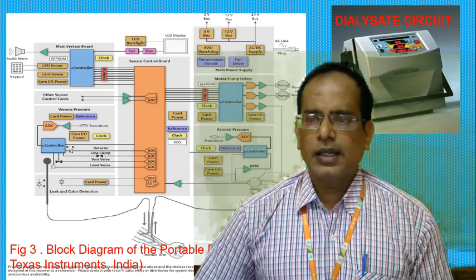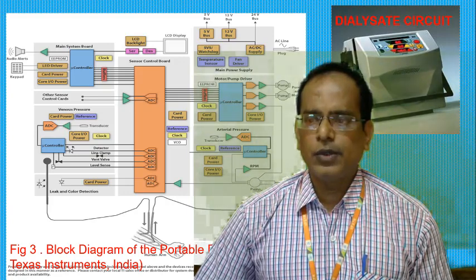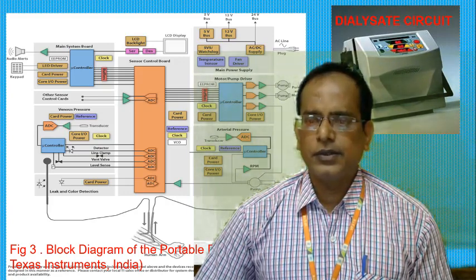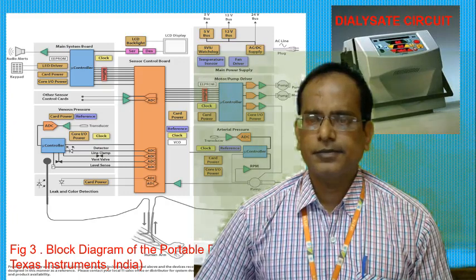Both types of machines — the home unit portable dialyser and the clinical machine — include the capability to add a bicarbonate buffer solution to the dialysate.